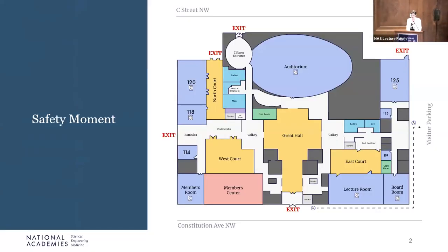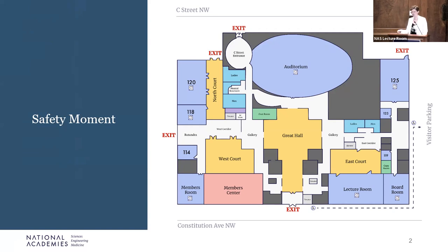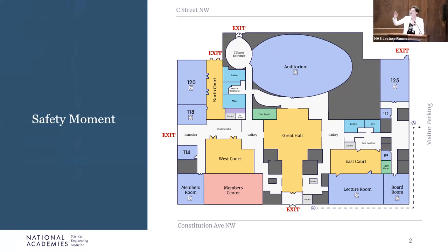For those of you that are here in person, here is a map of the NAS building. We are in the east side of the building, so the closest emergency exit is just right through the back, through those middle doors, and you can go out into the Great Hall, take a left, and you'll find yourself outside. And then the closest bathrooms are just across the hallway.